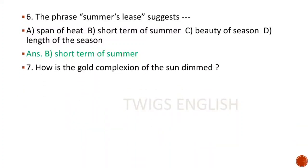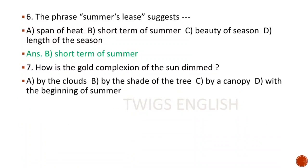Next MCQ: How is the gold complexion of the sun dimmed? Options are: by the clouds, by the shade of the tree, by a canopy, with the beginning of summer. Here the right answer is option A, by the clouds.